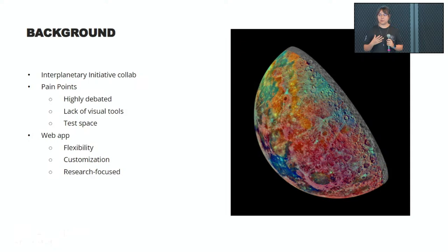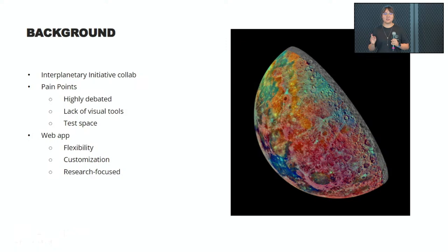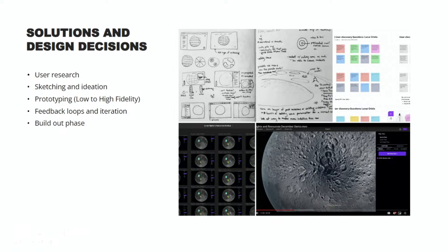From the beginning of our design process, we recognized a key pain point: there are currently no visual tools for this issue. Space lawyers — people working in this regulatory space around lunar rights and resources — mostly just read research papers and don't have a visual tool to help others understand how proposed frameworks might physically impact the lunar space. It's a highly debated issue, so we needed something very flexible and customizable to help visualize what proposed policies might look like.